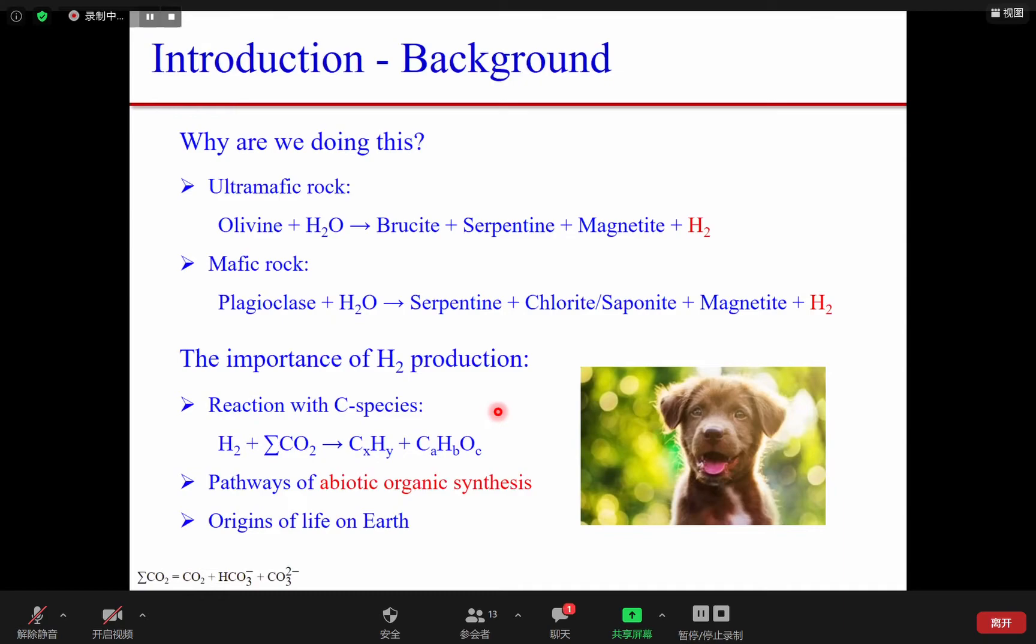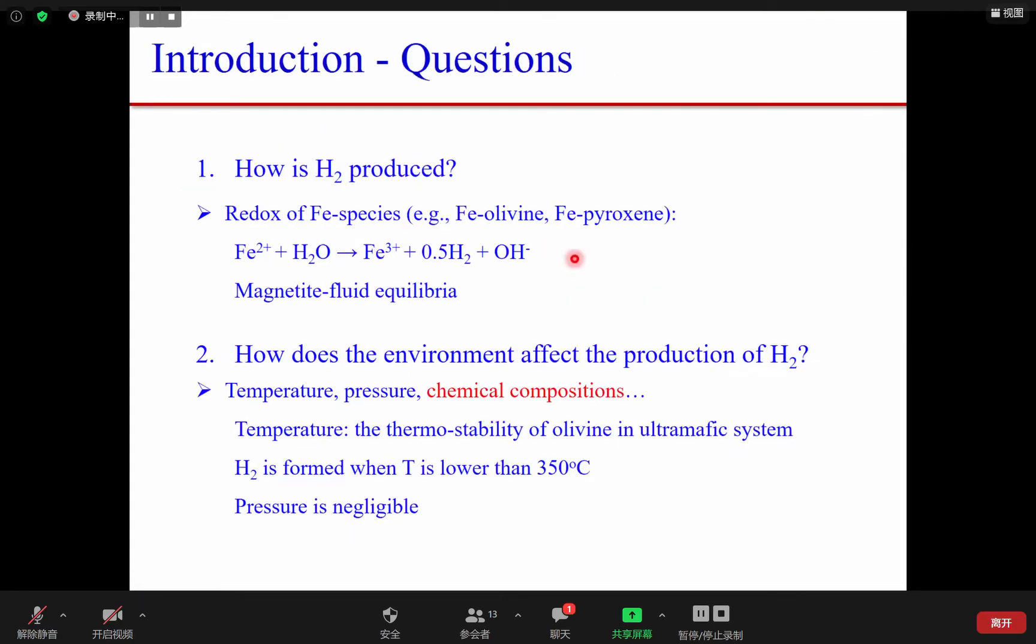Two main questions about hydrogen production: how hydrogen is produced and how the environment affects the process. Scientists have done many works and come to an agreement that the redox of iron species produce the hydrogen, which is controlled by magnetite fluid equilibrium. The iron is usually coming from iron olivine and iron pyroxenes.